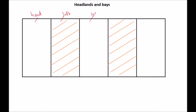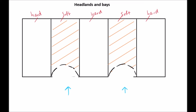Headlands and bays are a coastal landform. They are formed through bands of hard and soft rock. As water moves towards the coastline, the soft rock is eroded through hydraulic action. This forms a bay.